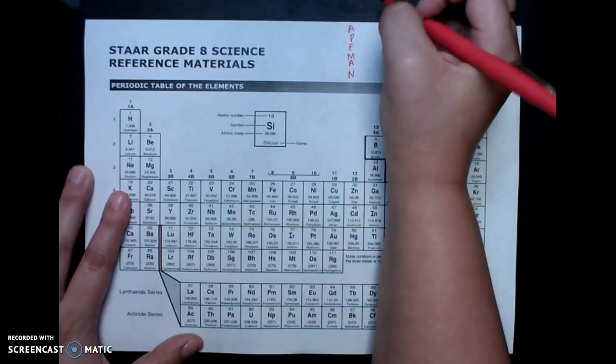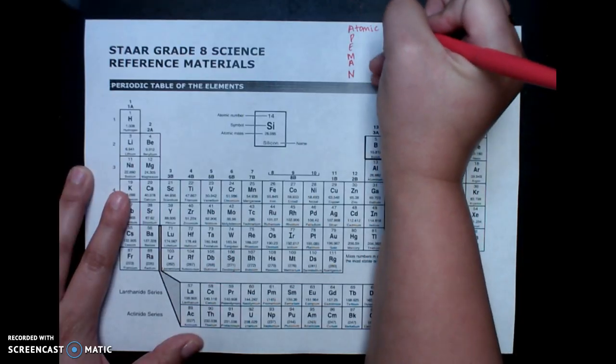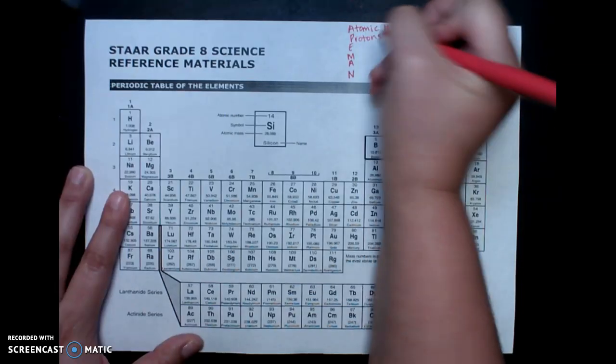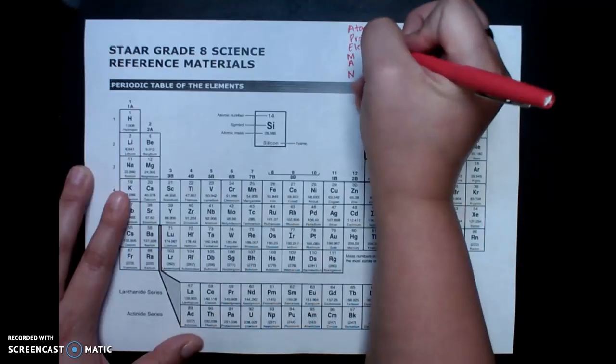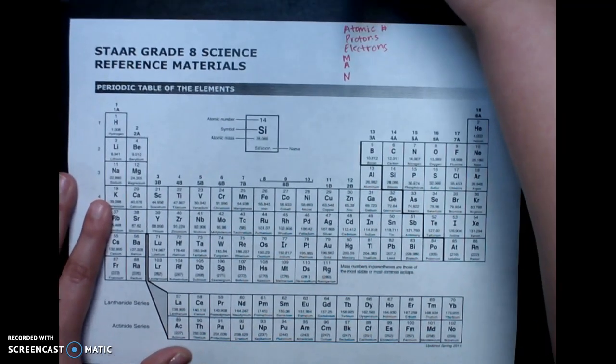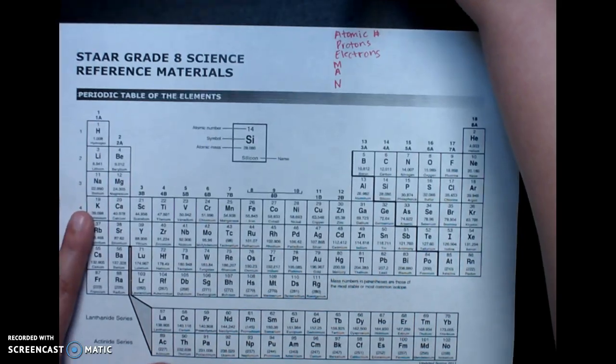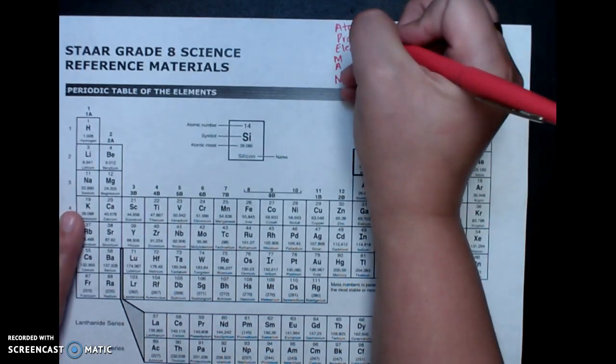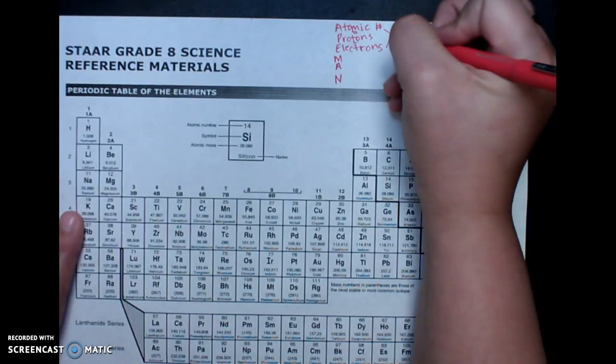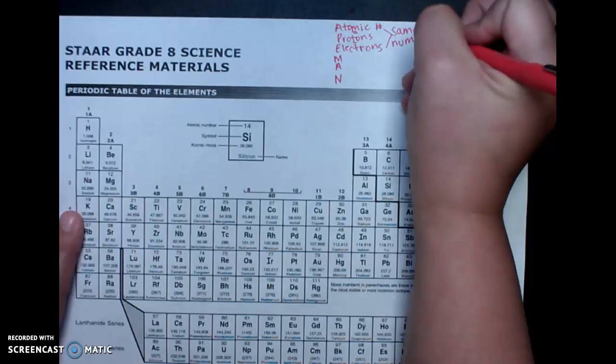And we need to remember that A stands for atomic number, P stands for protons, E stands for electrons. And what this tells us is that the atomic number is equal to the protons and equal to the electrons, meaning they're the same number. So if you know one, you know all of them.